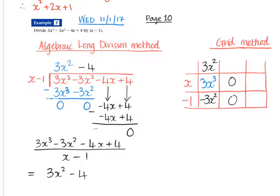If we look at the original, the next thing that we've got is minus 4. So that goes into the grid then. So if we take that and we put minus 4x in here, we've got minus 4 at the top and a plus 4 at the bottom. So that's how we deal with 0s - we just move on to the next place value of the algebra, so the next term there.